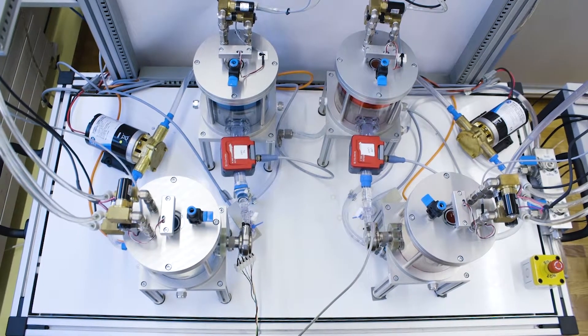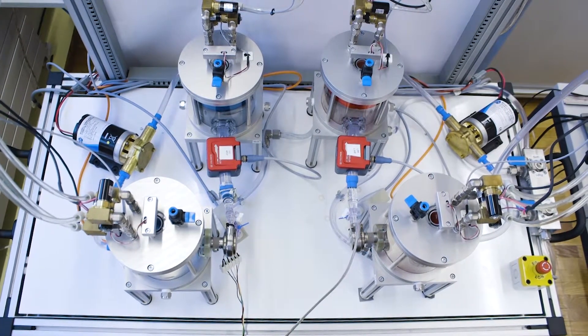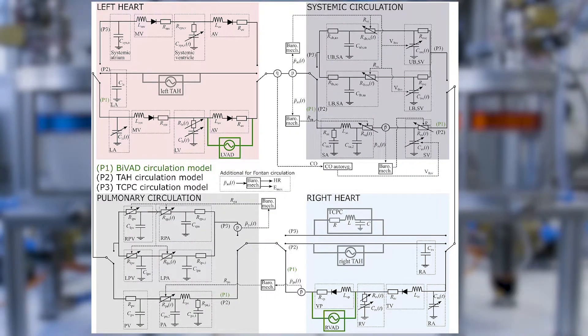The electric analog shows three different numerical models of the cardiovascular system. The first numerical model corresponds to the b-ventricular assist device test case, the second one to the total artificial heart, and the third model to the total cover pulmonary connection test case.